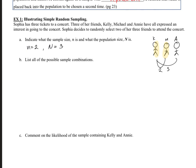Next is to list all of the possible sample combinations. Alright. What I'm going to do is stick with just K, M, and A instead of writing out their full names. So what is one of the first possibilities? Well, she could choose Kelly and Michael. Okay. And then we could have Kelly and Annie. Alright. So that's it with Kelly.